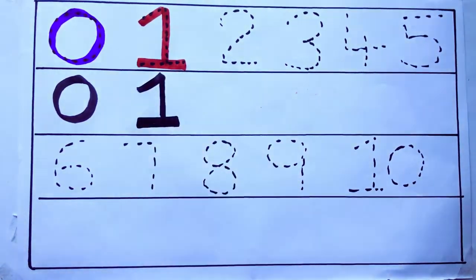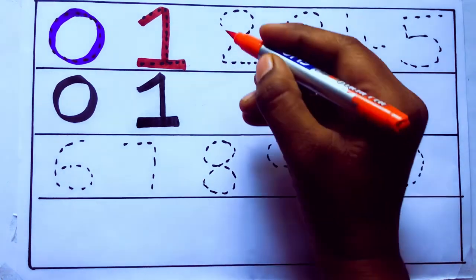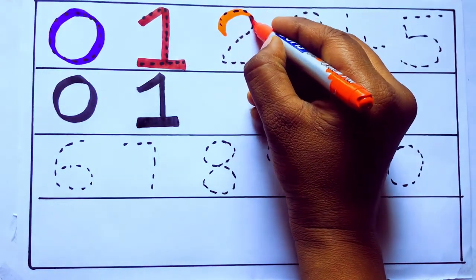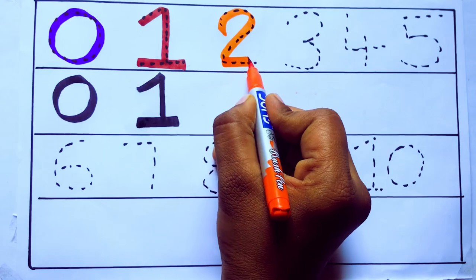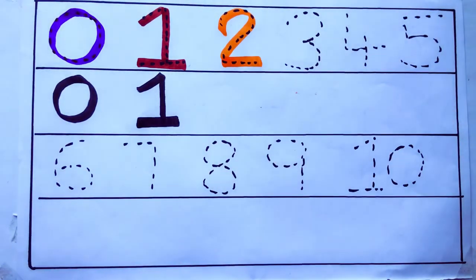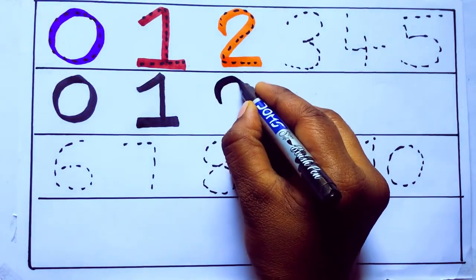Number 1. Brown color. One. Orange color 2. T-W-O. Two.